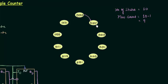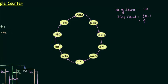The counter starts at 0000, then for each negative-edge clock: 0001 (1), 0010 (2), 3, 4, 5, 6, 7, 8, 9, and then back to 0. It is clearly up counting because for every passing clock pulse we have higher values.